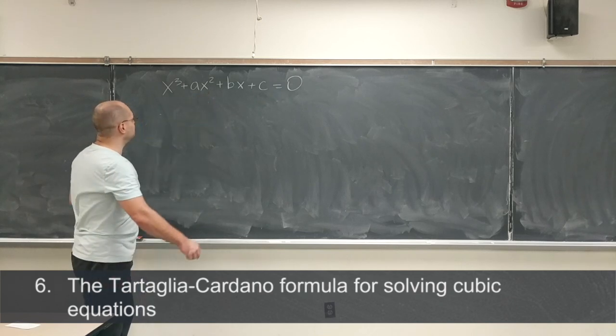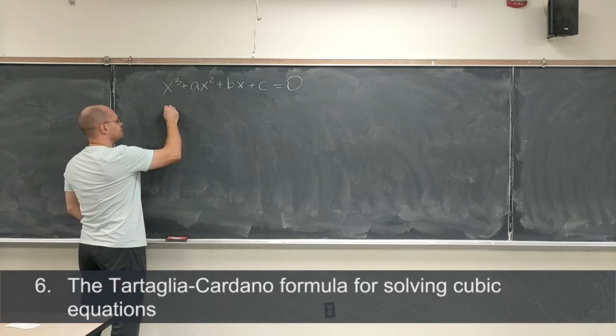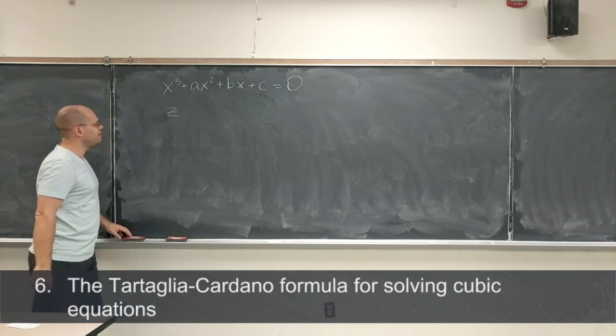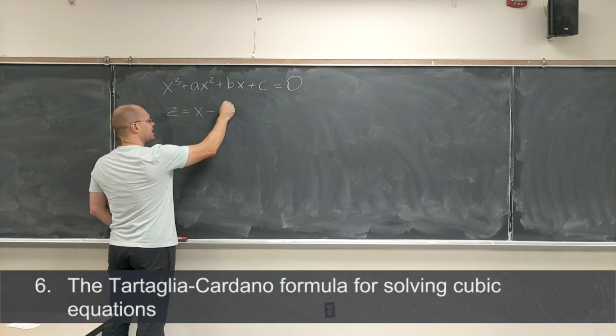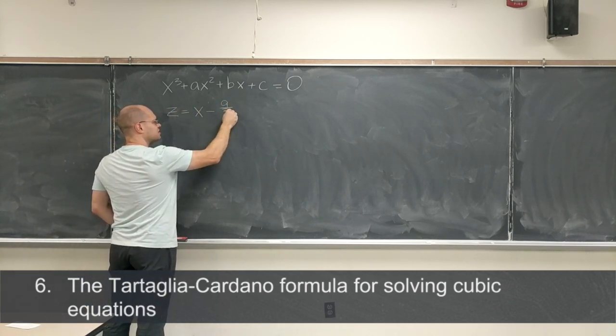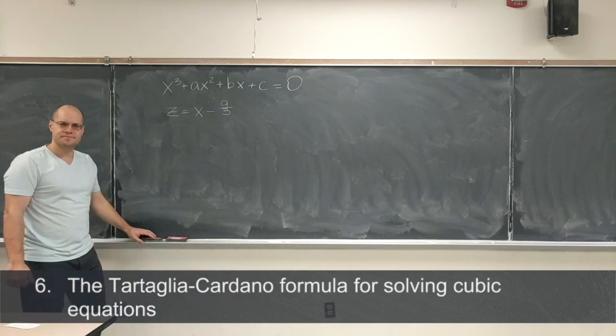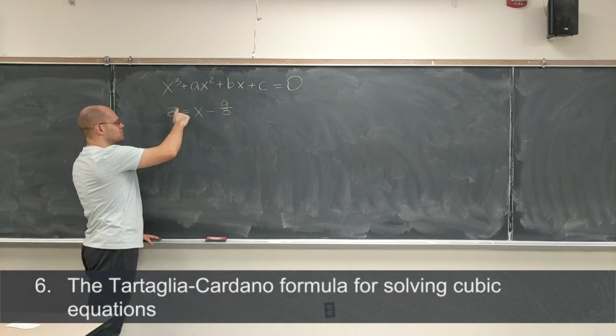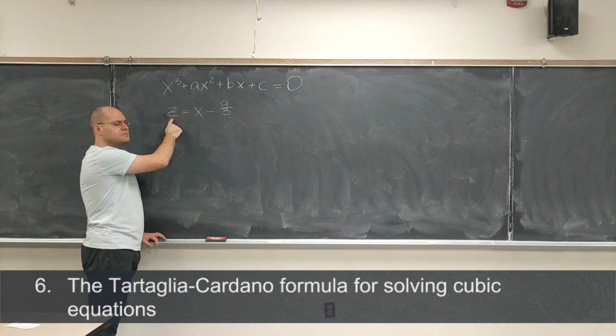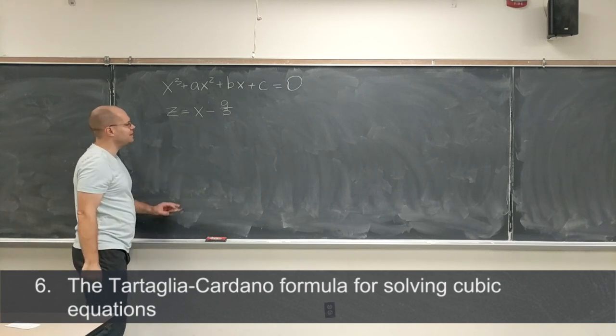And it turns out that you can always eliminate the next term, and you do it by simple substitution. That substitution I'll use the letter Z equals x minus a divided by 3, so it's just this simple shift. Actually, I'm sorry, x equals z minus a over 3.